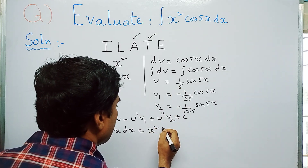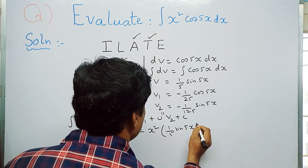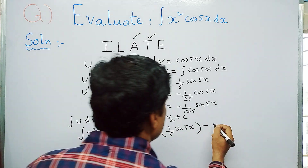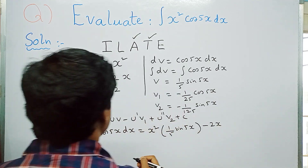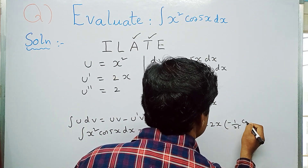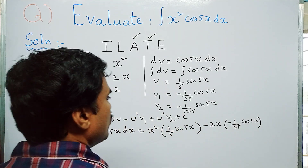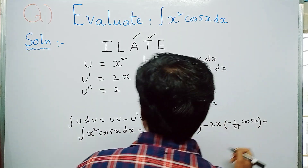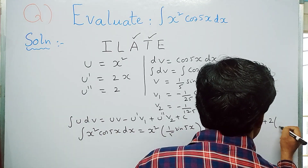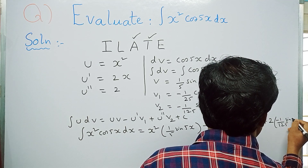Substituting: u·v = x²·(1/5)sin 5x; minus u′·v₁ = 2x·(−1/25)cos 5x; plus u″·v₂ = 2·(−1/125)sin 5x.